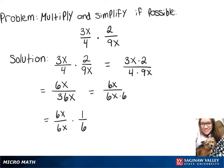6x over 6x is just 1, so that'll go away, leaving us our final answer of 1 over 6.